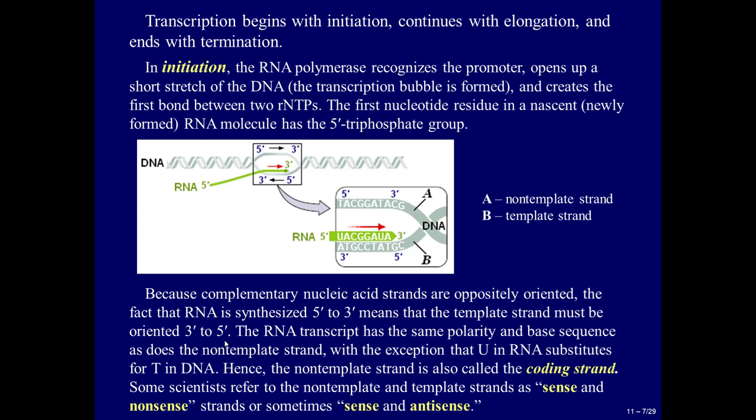Transcription begins with initiation, continues with elongation, and ends with termination. In initiation, the RNA polymerase recognizes the promoter, opens up a short stretch of the DNA, the transcription bubble is formed, and creates the first bond between two ribonucleoside triphosphates (RNTPs). The first nucleotide residue in a nascent, newly formed RNA molecule has the 5' triphosphate group.